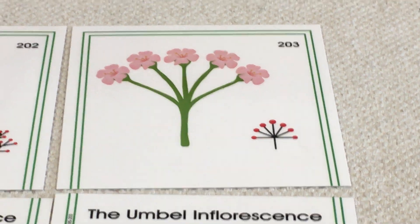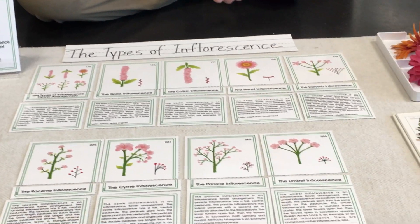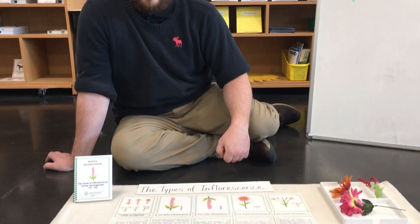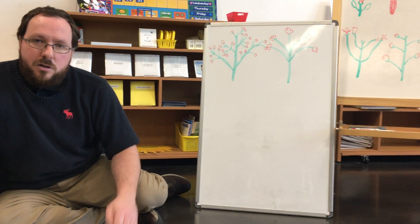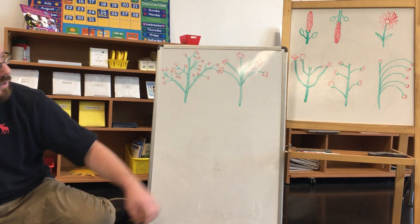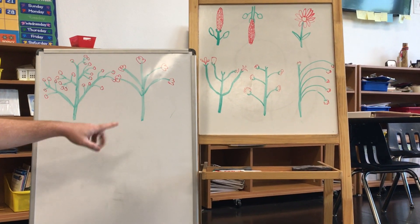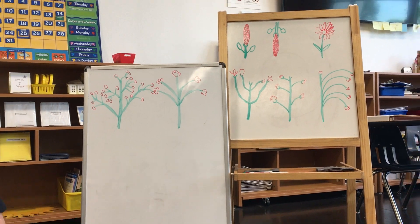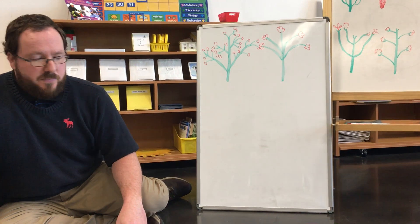So all of these are just some of the arrangements or inflorescences of flowers. I'm sure you can go outside and find many different types of inflorescences just in your neighborhood. I hope you enjoyed coming to Botany Circle. Your work today will be to draw or find pictures of different types of inflorescences and write the names of those types. I'll see you next time. Bye-bye.